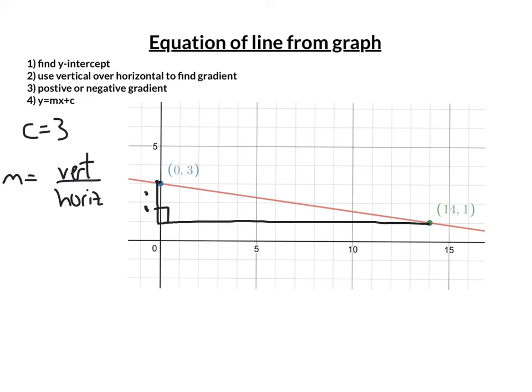The vertical difference is 1, 2. The horizontal distance is 1, 2, 3, 4, 5, 6, 7, 8, 9, 10, 11, 12, 13, 14.